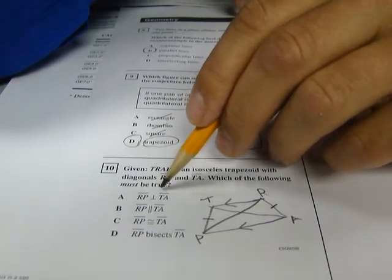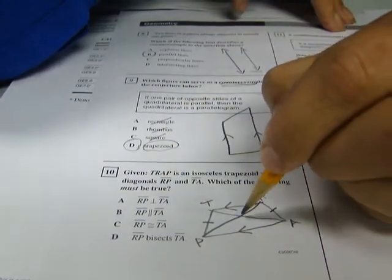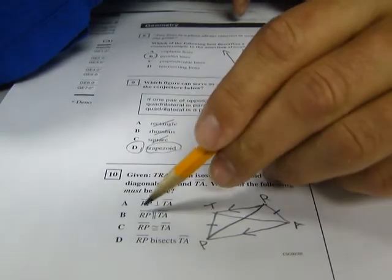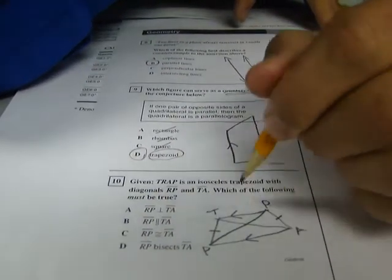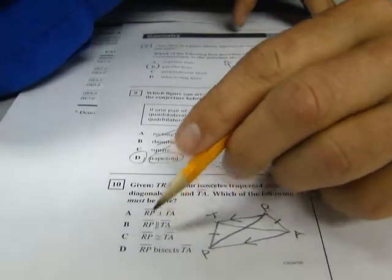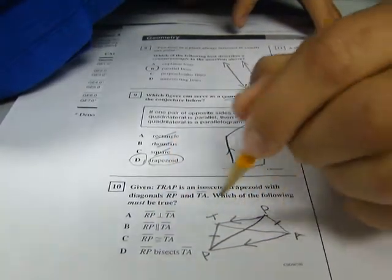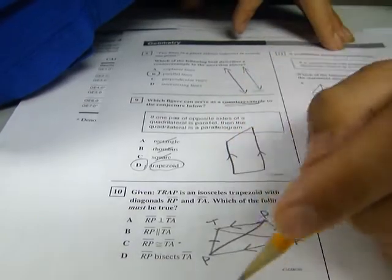RP is perpendicular to TA. No, that's not a 90 degree angle. No way. RP is parallel to TA. That's actually impossible because they intersect. So they can't be parallel. RP is congruent to TA. I think that's what we just said. I'm going to mark that. I think that makes sense.